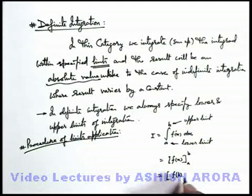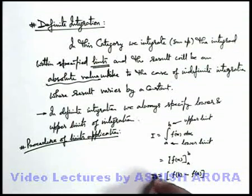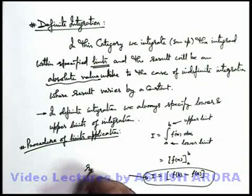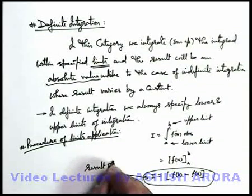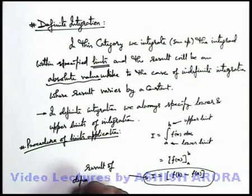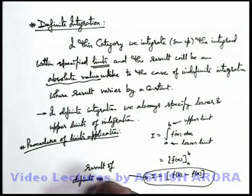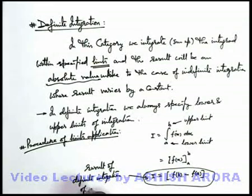We first find f of b minus we find f of a. So this f of b minus f of a, this we define as result of definite integration of f prime x from a to b, where a to b are the limits.